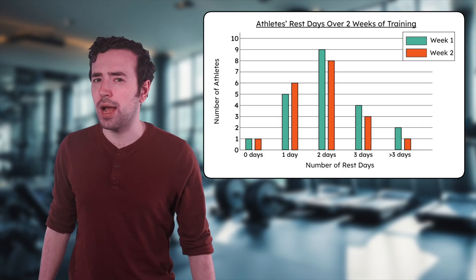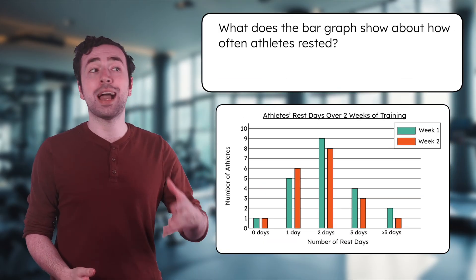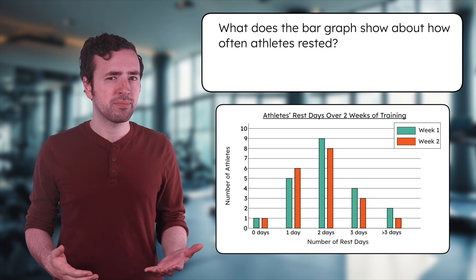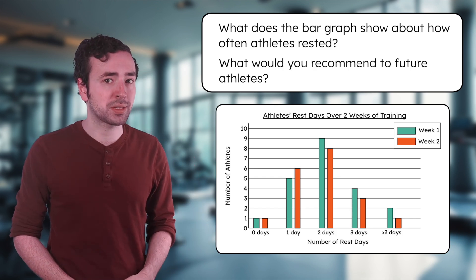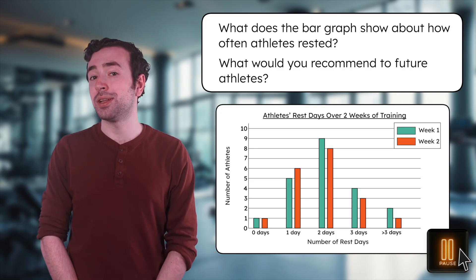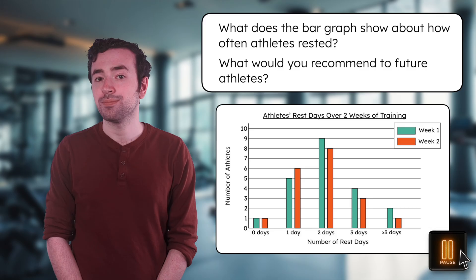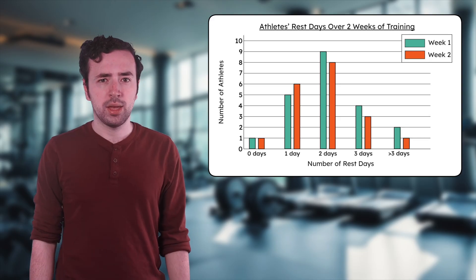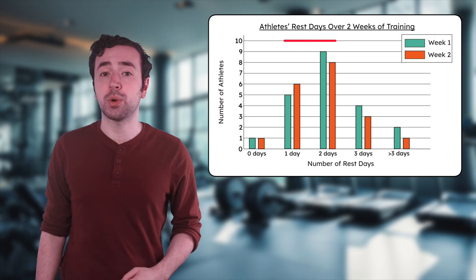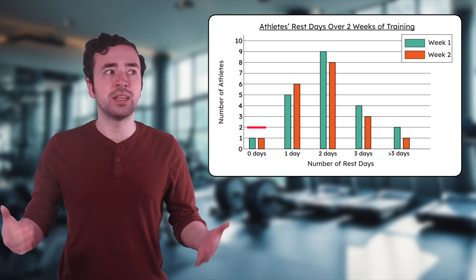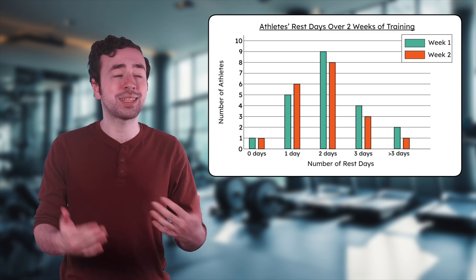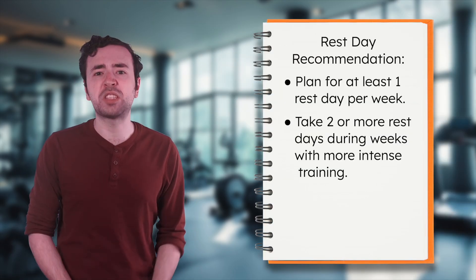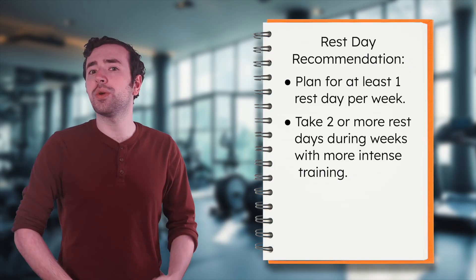Now for one final factor for our guide: rest days. What does this bar graph show about how often athletes rested? Are most athletes taking rest days every day, just once a week, or somewhere in between? Based on the data, what would you recommend to future athletes? Pause here to record your analysis and recommendation in your guided notes. This bar graph shows the number of athletes who took one, two, three, or more rest days each week. Most athletes took one or two rest days per week — very few took three or more, and hardly anyone trained every single day. This suggests that athletes balance effort with recovery, training consistently and giving their muscles time to rebuild. For our training guide, we could recommend that future triathletes plan for at least one rest day each week, and possibly two during intense training periods.